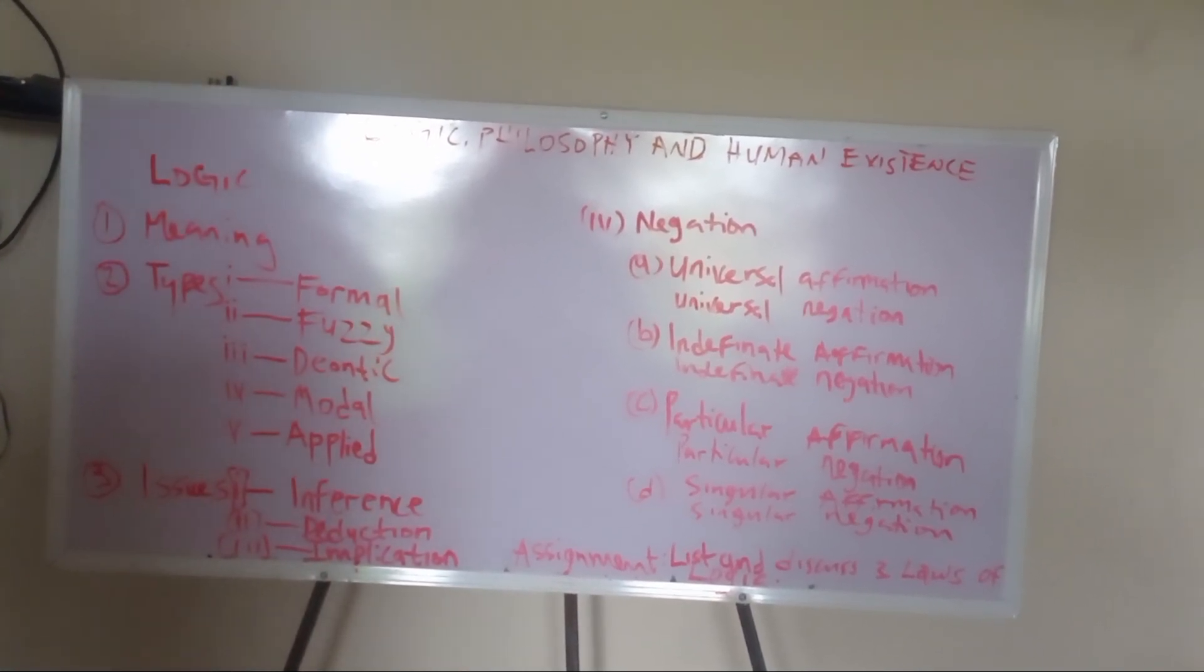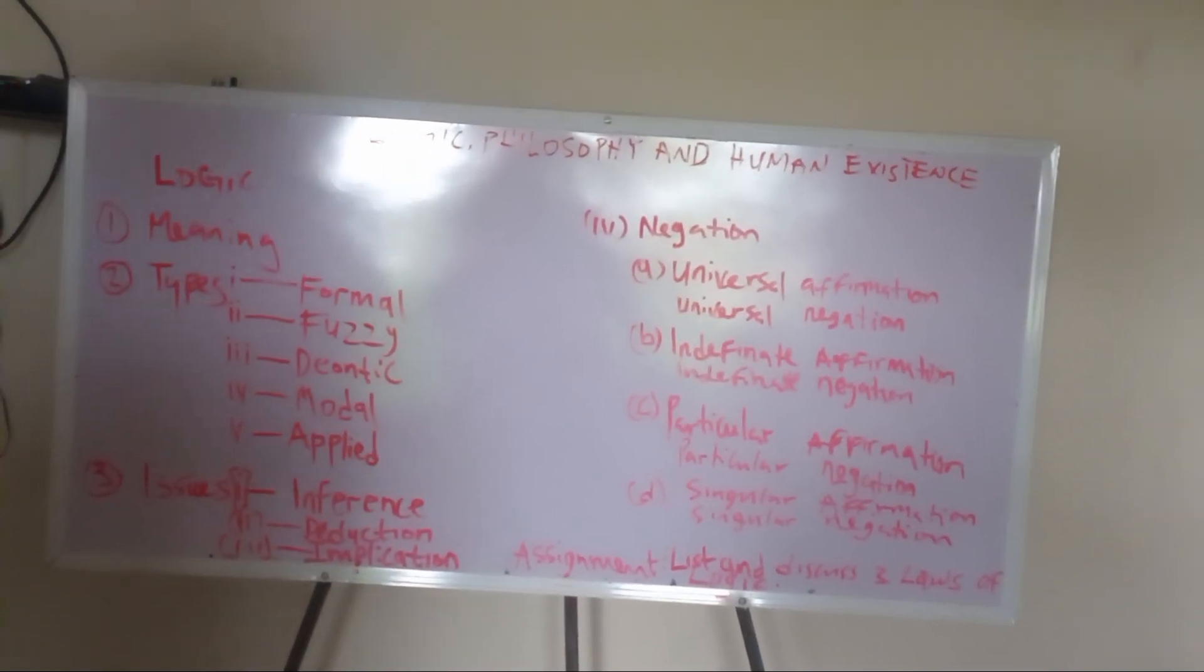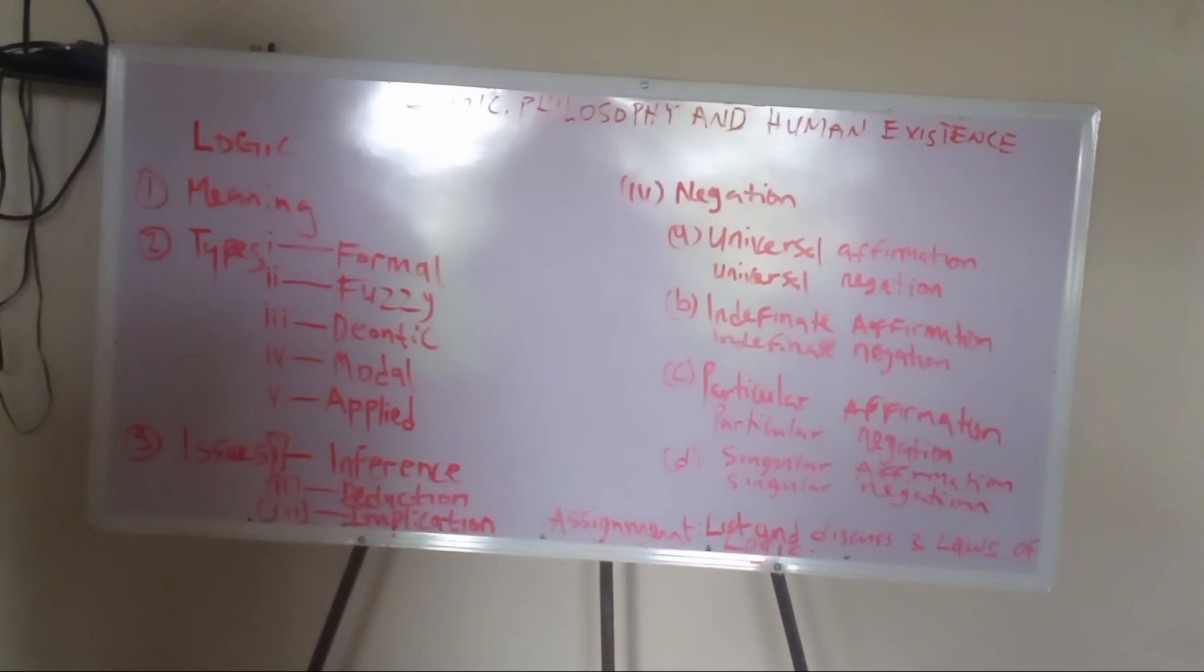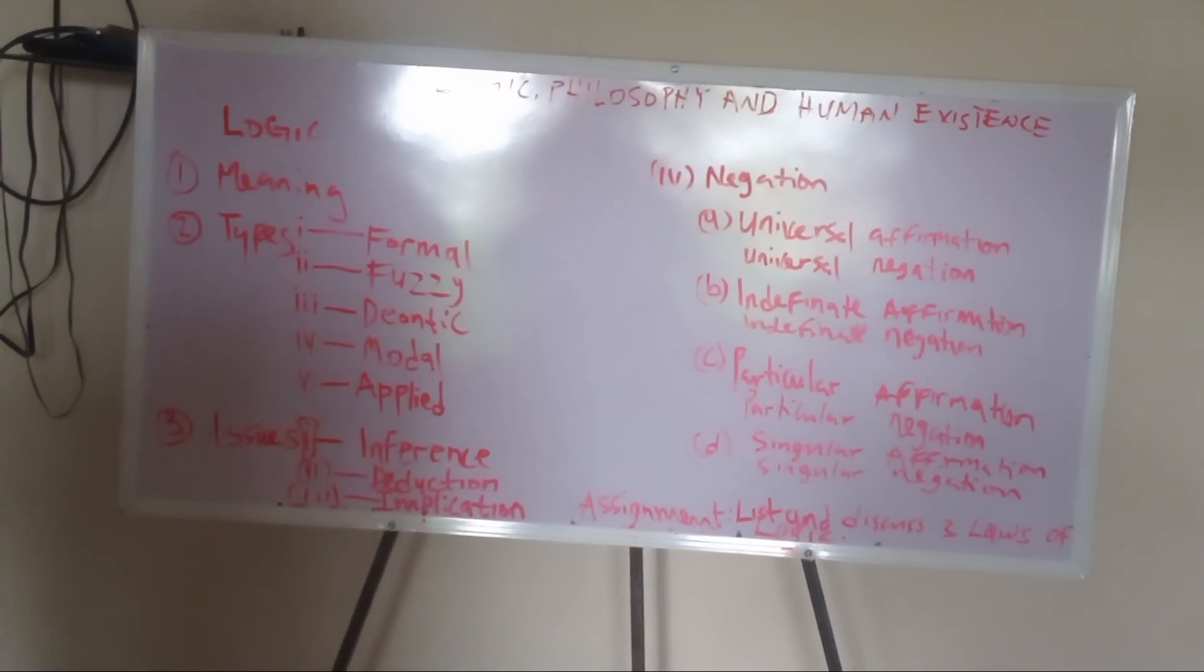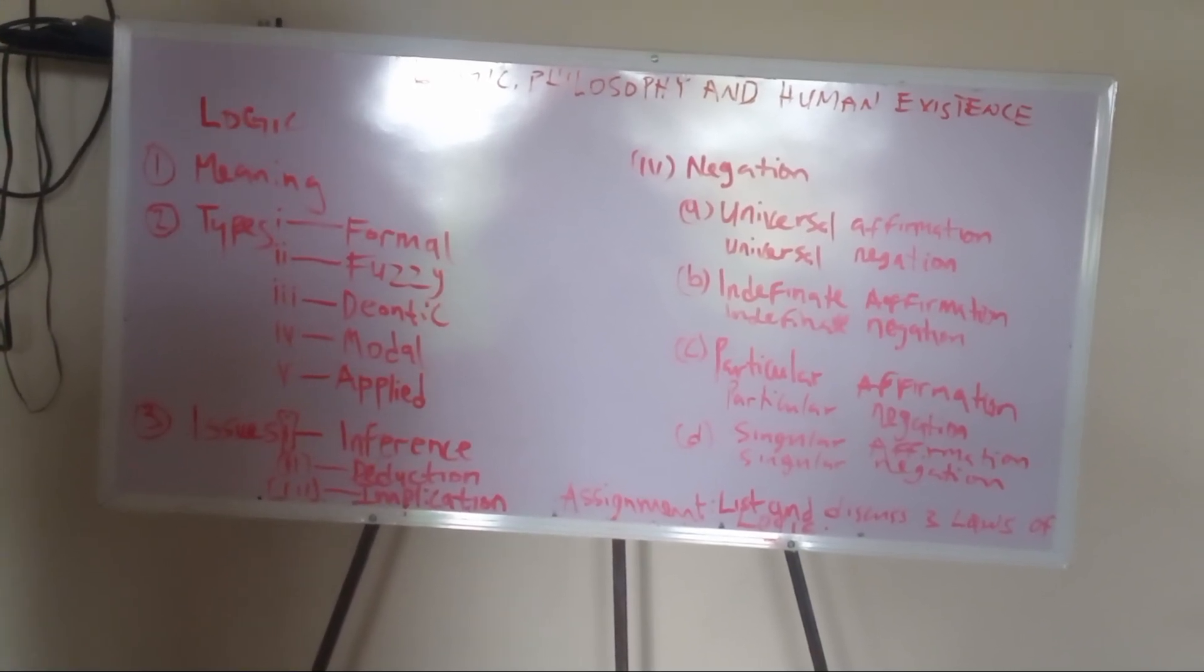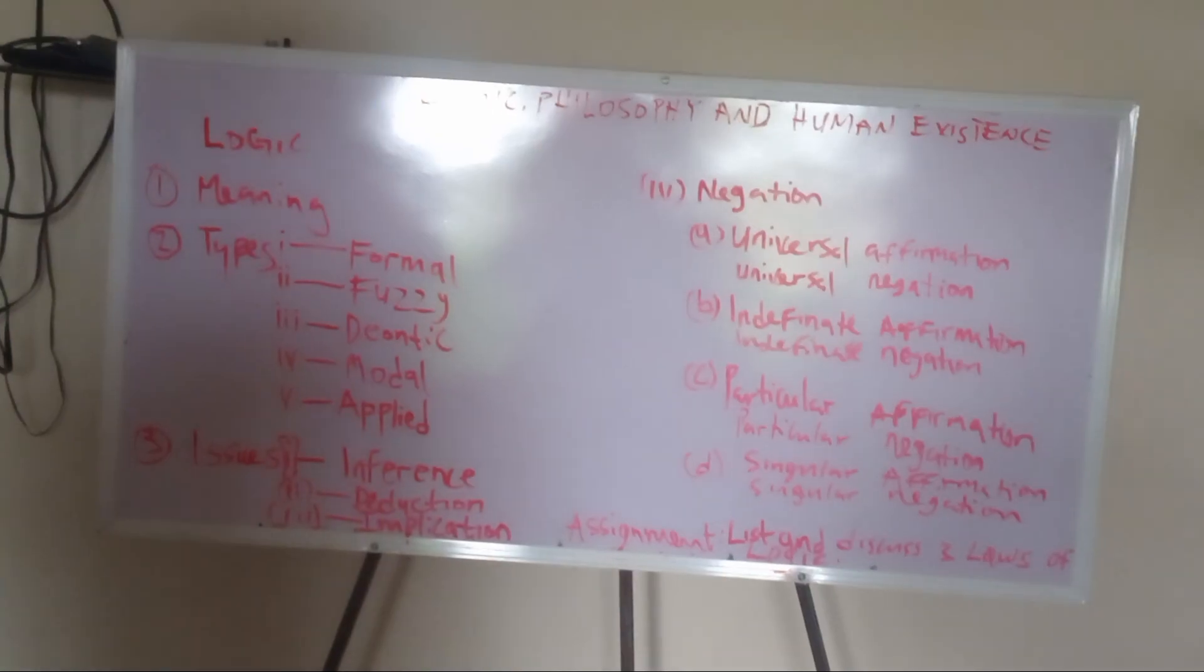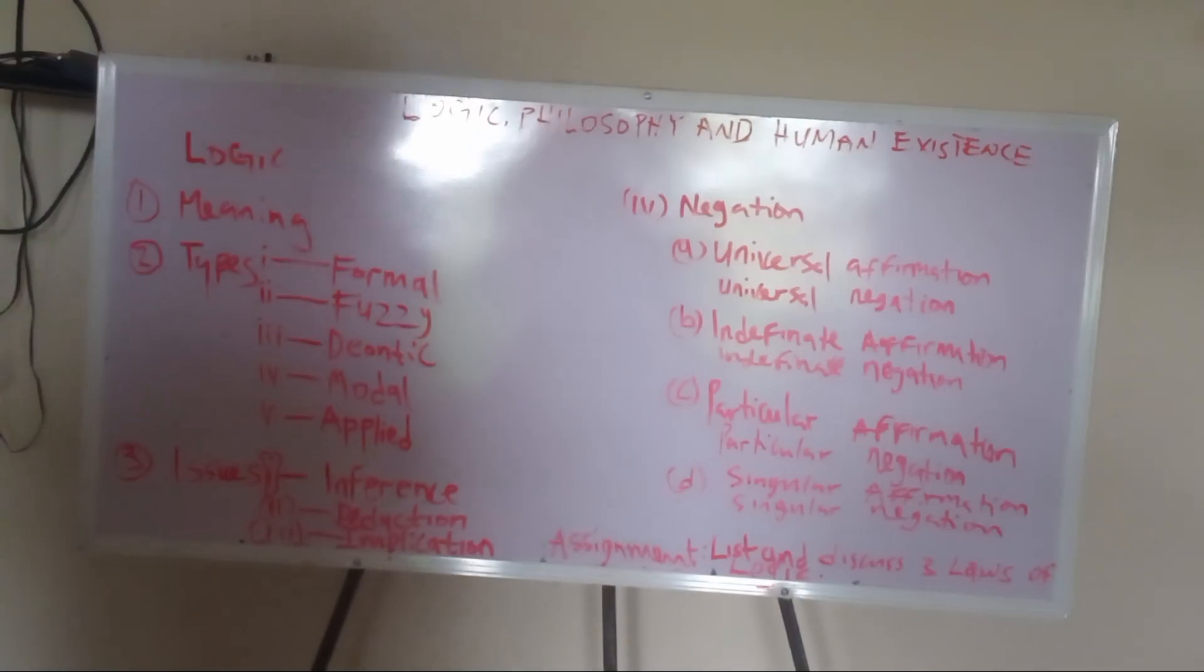Singular will identify a particular individual among the university students. That is why it is singular. From the particular, you are bringing out a particular person. You say, Socrates is a genius. Okwemi is a genius. The negative is, Socrates is not a genius. You have identified and pinpointed a particular person.